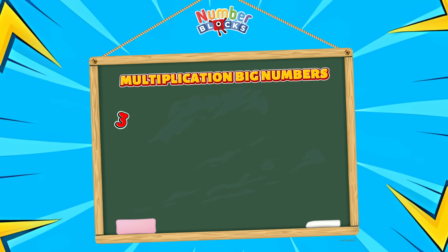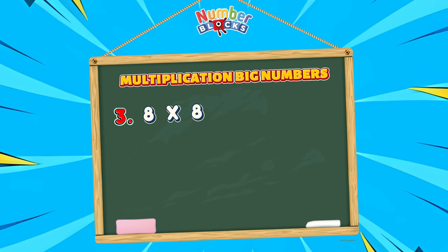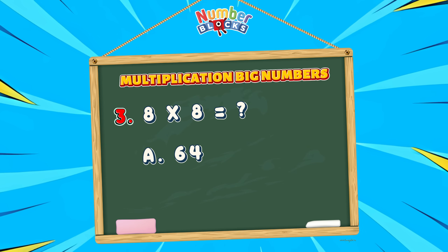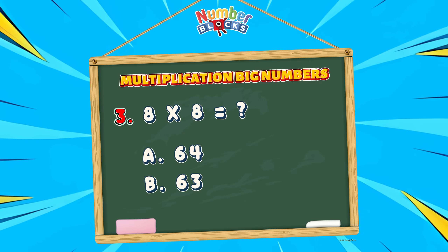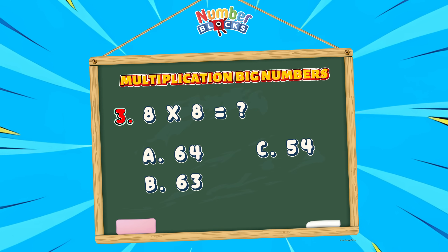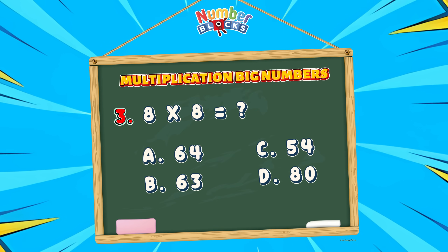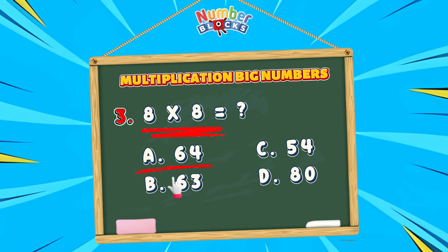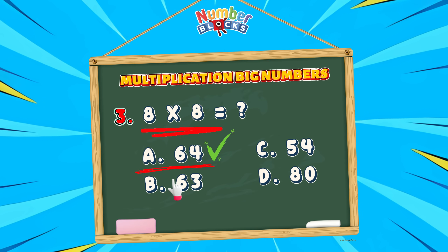Question number 3: 8 multiplied by 8 is equals to... A, 64. B, 63. C, 54. Or letter D, 80. And the correct answer is letter A, 64. 8 multiplied by 8 is equals to 64.